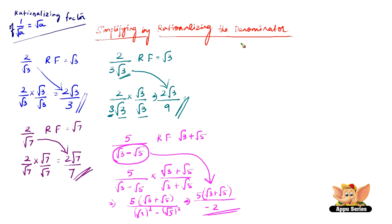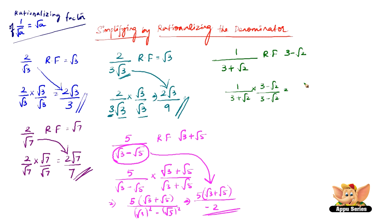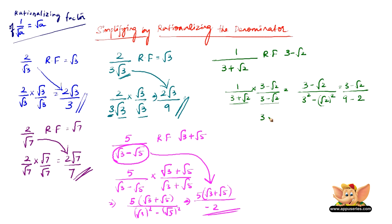Let us take another example: rationalize the denominator of 1 by 3 plus root 2. The rationalizing factor is 3 minus root 2, because the sign is plus, so we just change it to minus. So multiply and divide 1 by 3 plus root 2 by 3 minus root 2. The numerator gives 3 minus root 2, and the denominator 3 plus root 2 into 3 minus root 2 is a squared minus b squared, which is 3 squared minus root 2 squared, giving 9 minus 2 equals 7. Therefore, 3 minus root 2 by 7 is the simplified form of 1 by 3 plus root 2.